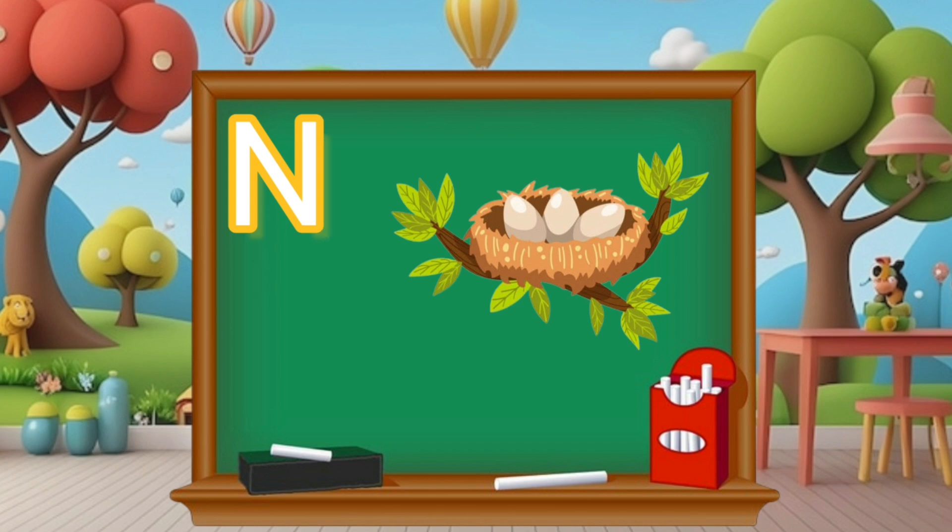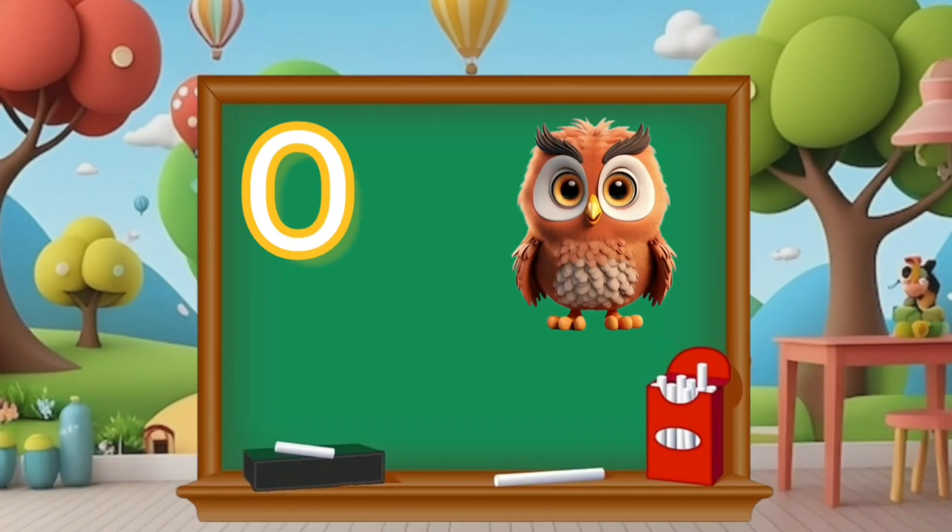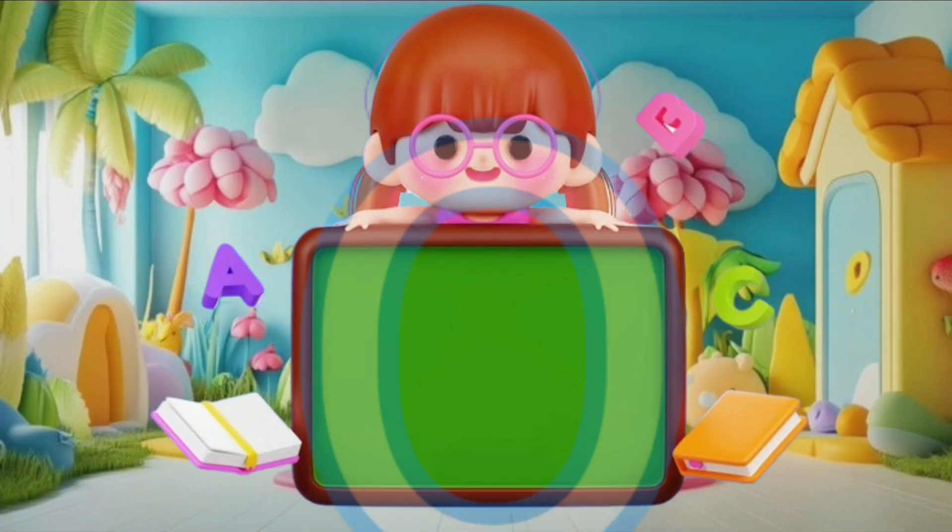N is for nest. Can you say N? N. O is for owl. Now say O. O.